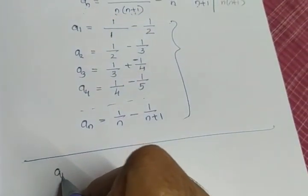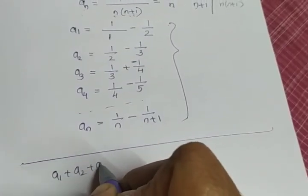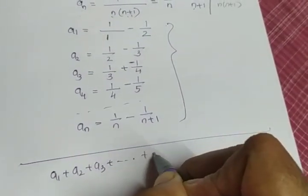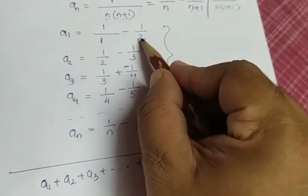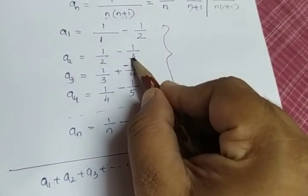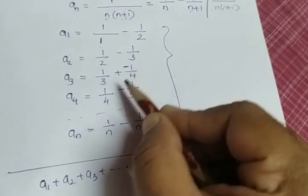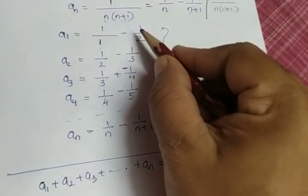So what will be the left side? A1 plus A2 plus A3 plus etc. plus An is equal to... Here you can see 1 by 1 minus 1 by 2 plus 1 by 2 minus 1 by 3 plus 1 by 3 minus 1 by 4. Like that it goes, isn't it?